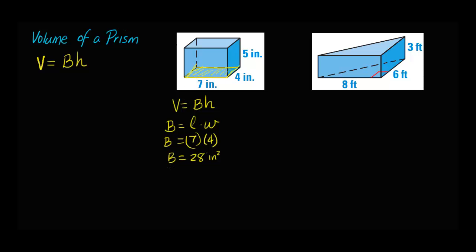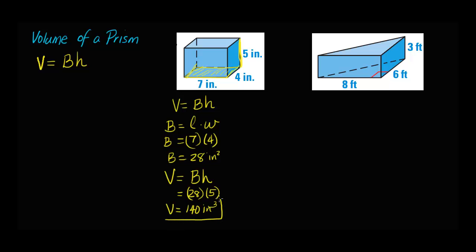Now for volume, I would have to multiply that area times the height. Here's the height of the prism — how tall is this box? It's five inches tall. So for volume, I'm going to multiply B times H, that would equal 28 times the height, which is five. And that equals a total of 140 cubic inches. That's the answer for the volume of this box.